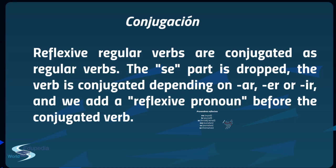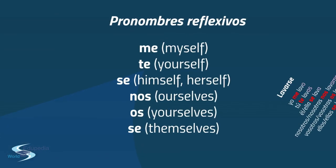The reflexive pronouns are: me — myself; te — yourself; se — himself and herself; nos — ourselves; os — yourselves; and se. Repeat after me: me, te, se, nos, os, se. Not that difficult, right?